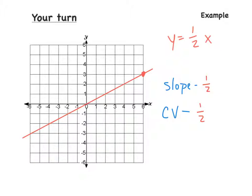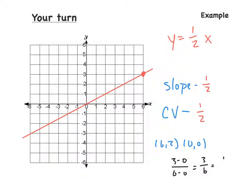If you want to check that out, just to make sure — remember we have (6, 3), and then the other point we have is (0, 0). So the change in y is 3 minus 0, and the change in x is 6 minus 0. So 3 divided by 6 can be reduced down to one-half. So our slope, if we work it out, is the exact same thing. Slope and constant of variation are the exact same thing.